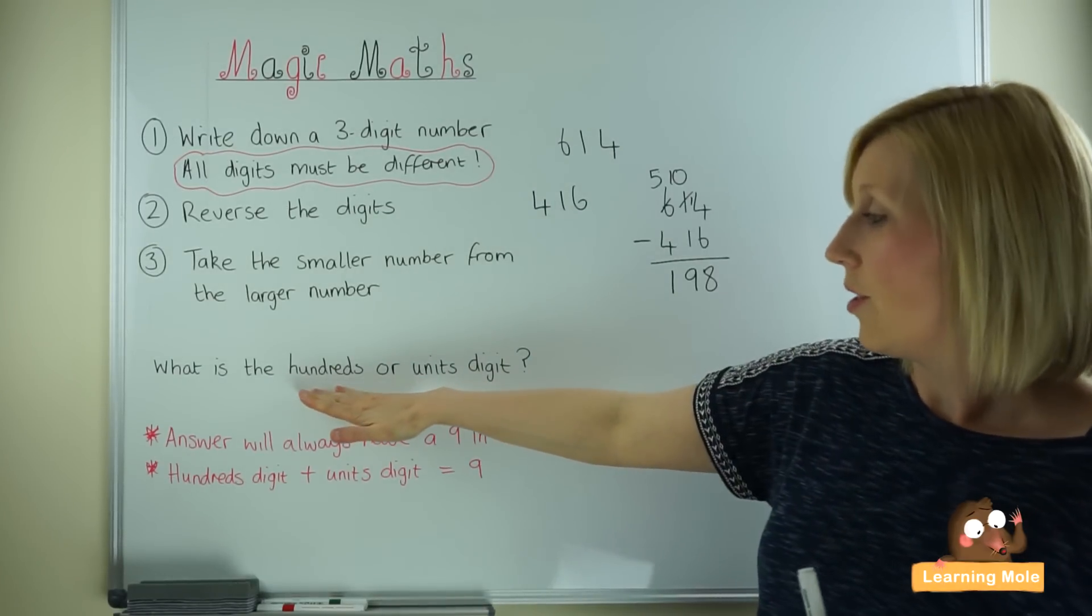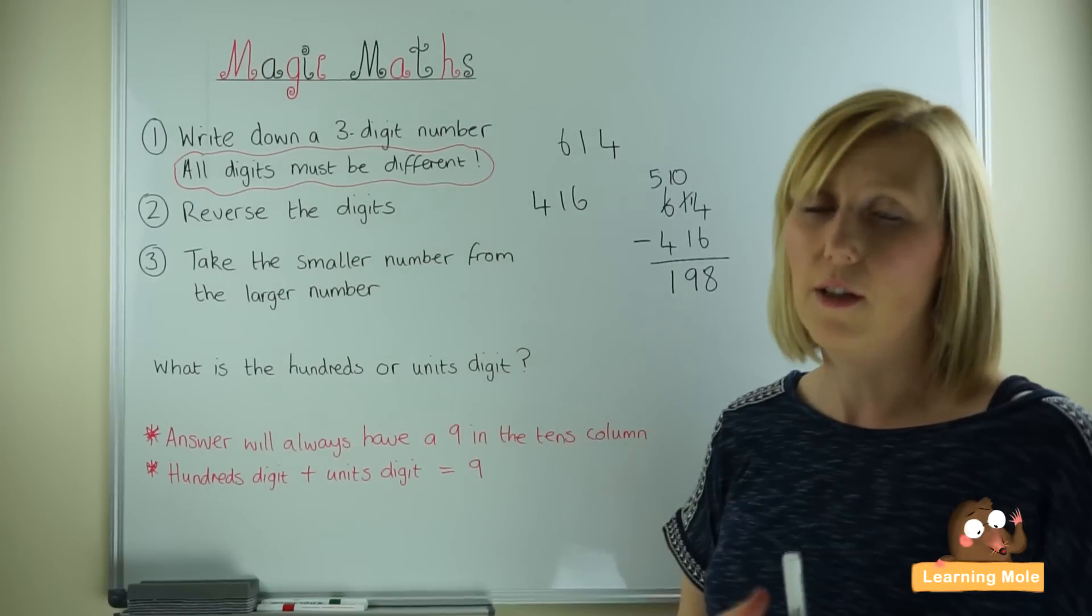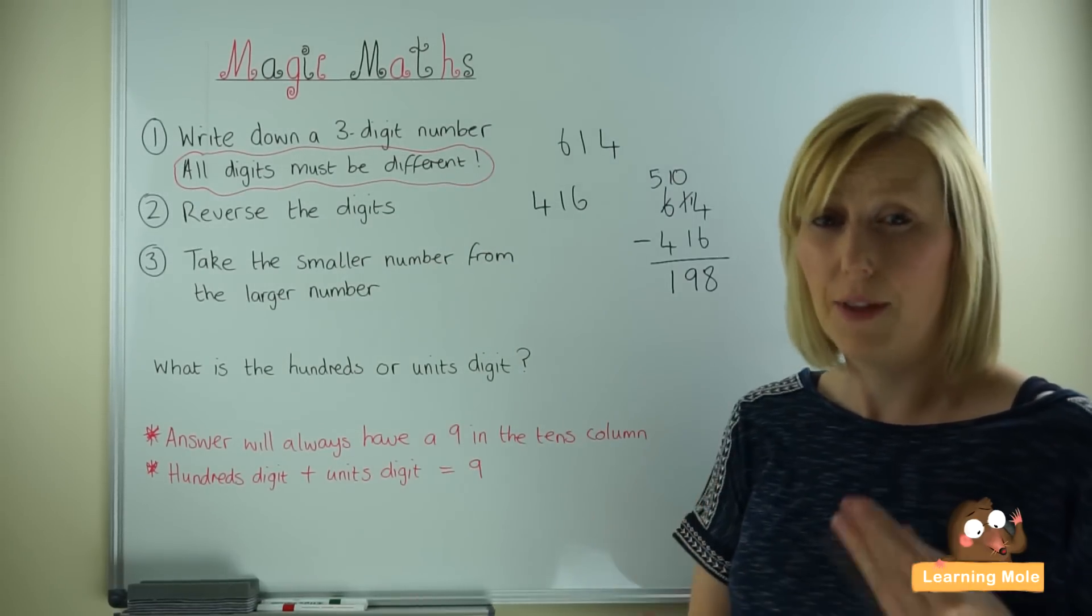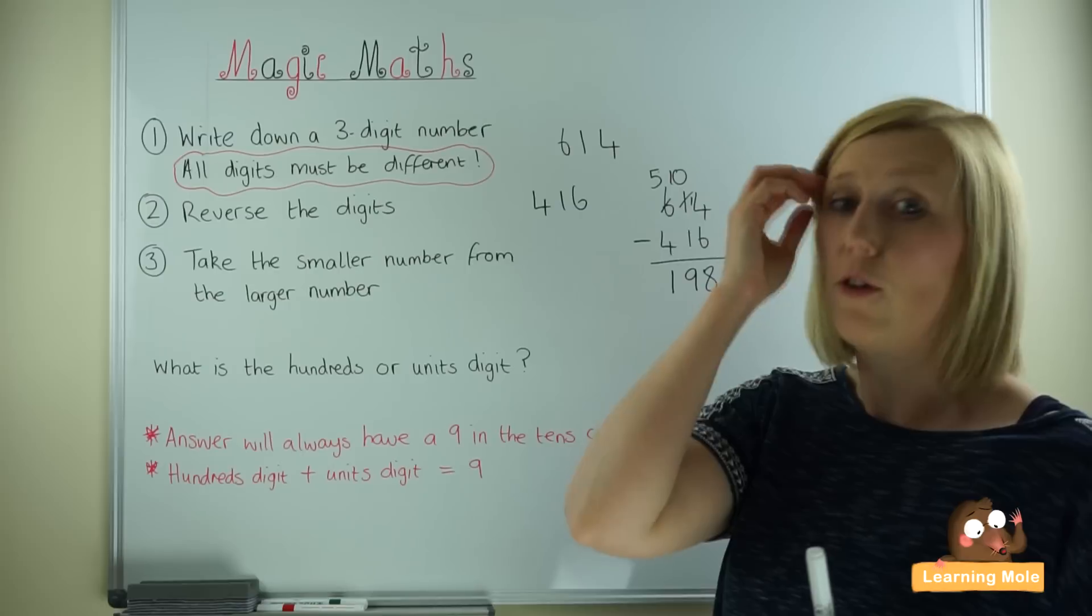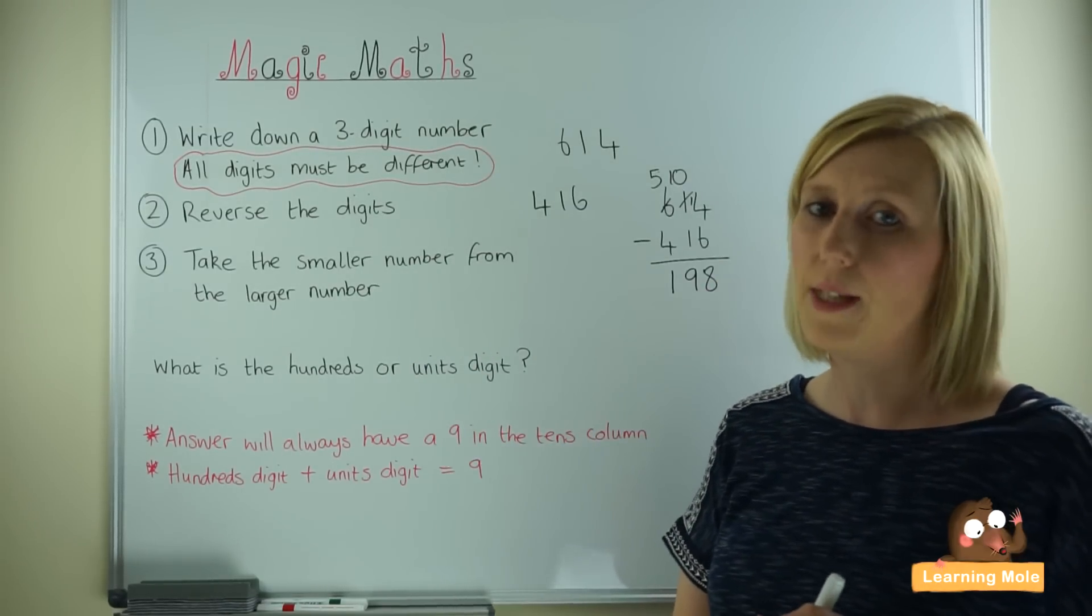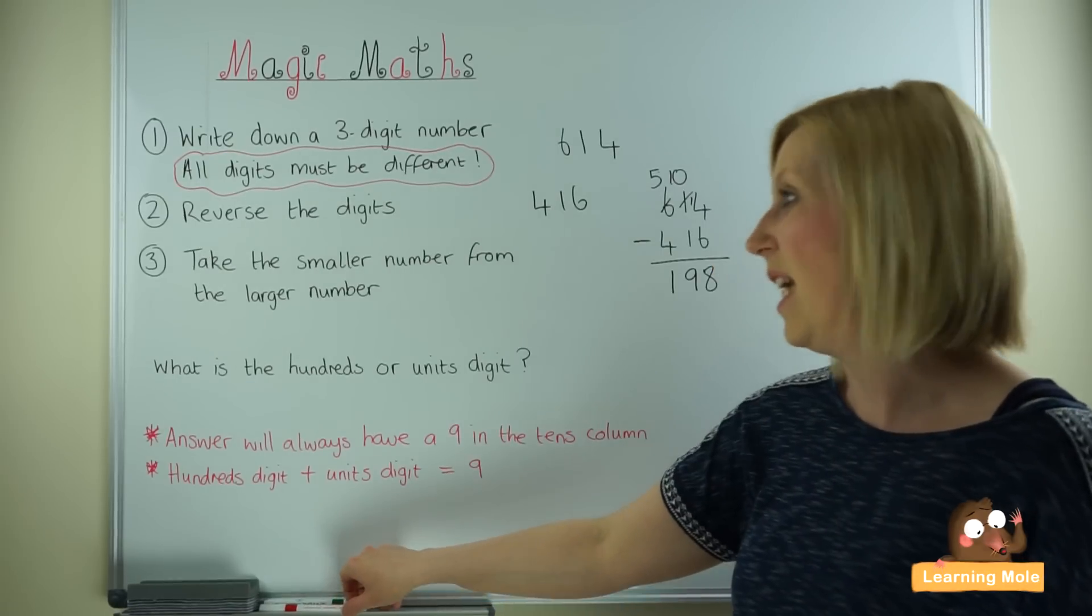You are now going to get your child to ask what is the hundreds or the units number. So that's where the place value really does come in. And they will already know that their tens number is always going to be a 9. And as you can see it is.